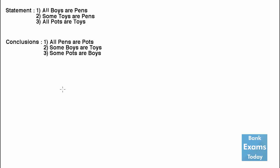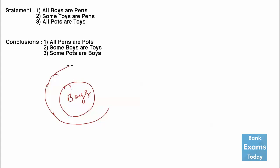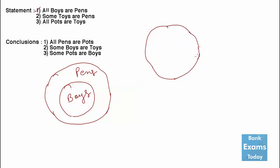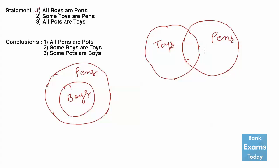Let's draw a circle for this. All the boys are part of the bigger circle, that is pens. Now the second statement: some toys are pens. A part of toys is pens — so we draw overlapping circles for toys and pens.